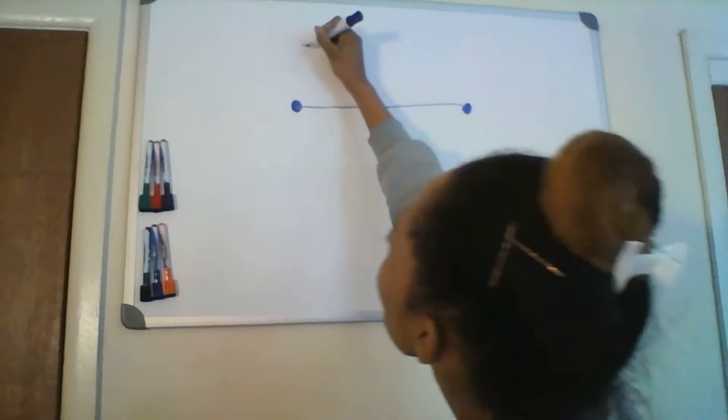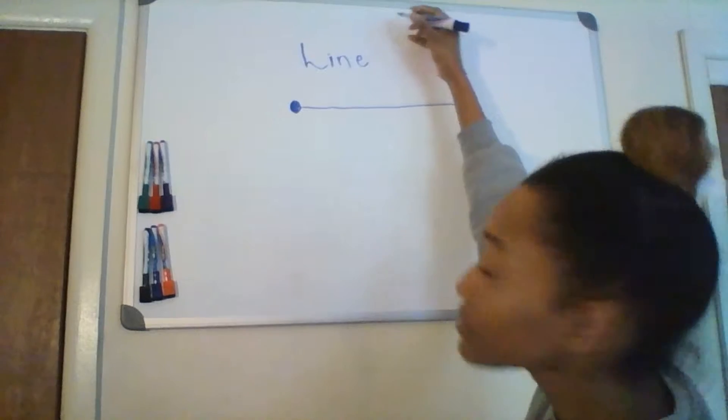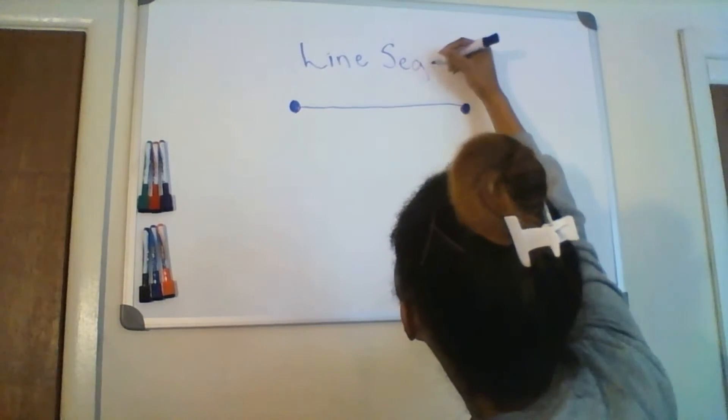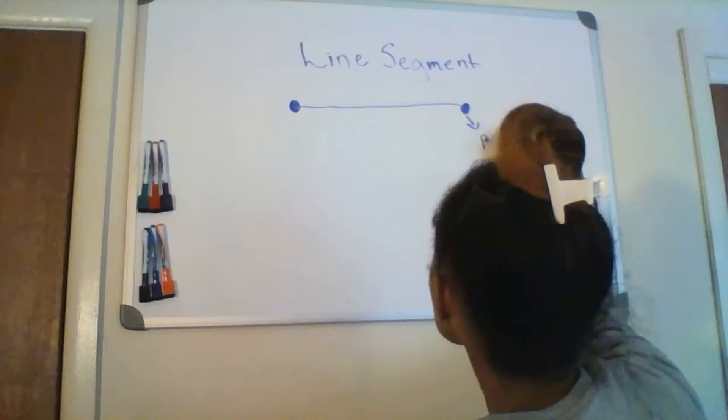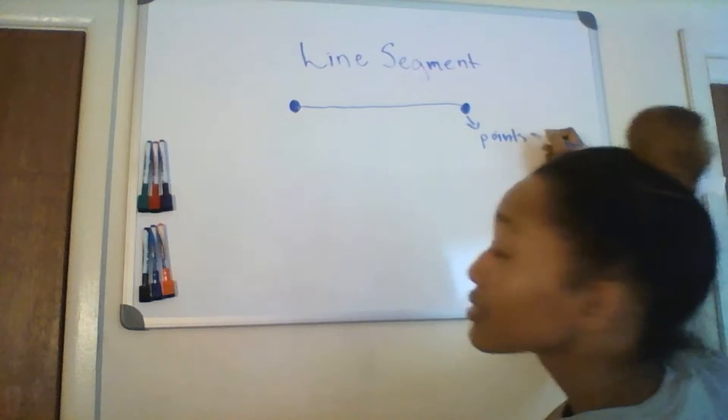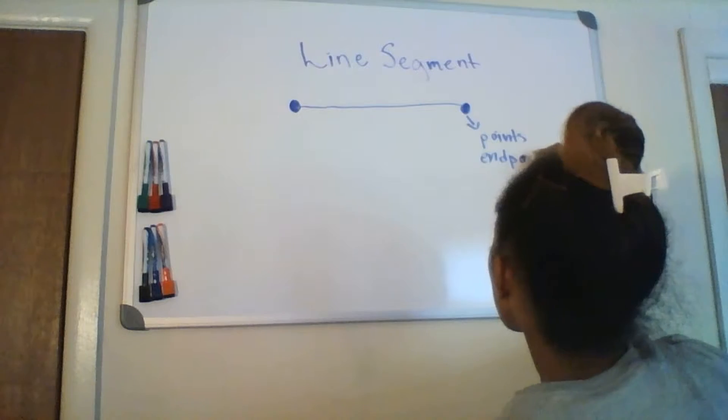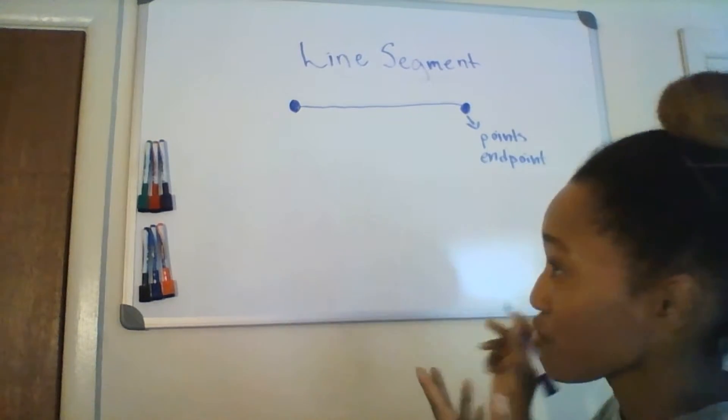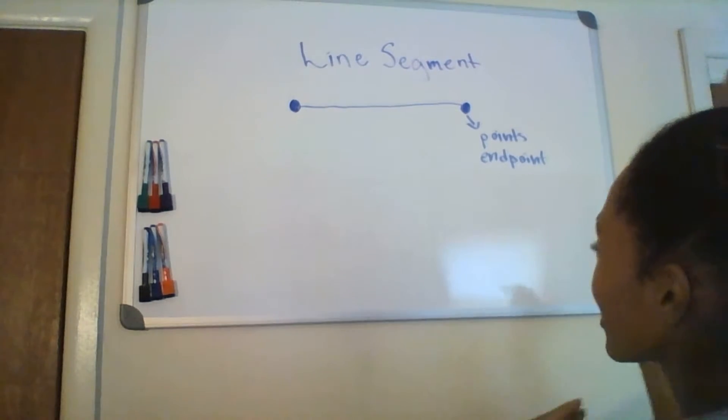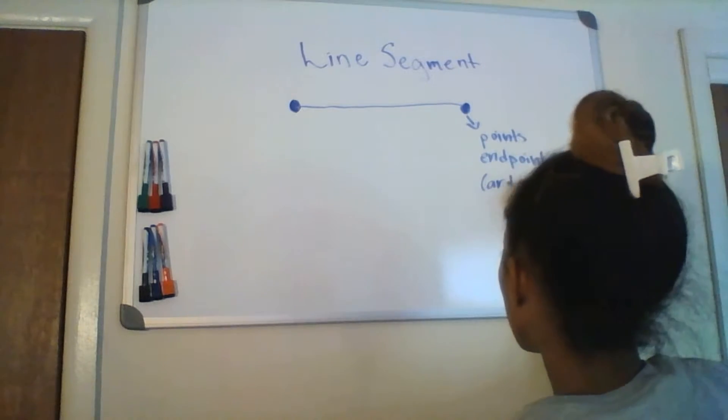So here you have a line segment. These are called points, endpoints, and for those of you erudite brainiacs out there, if you want to know more exclusive terminology for a point on a line segment, you can identify them as Ardvart.